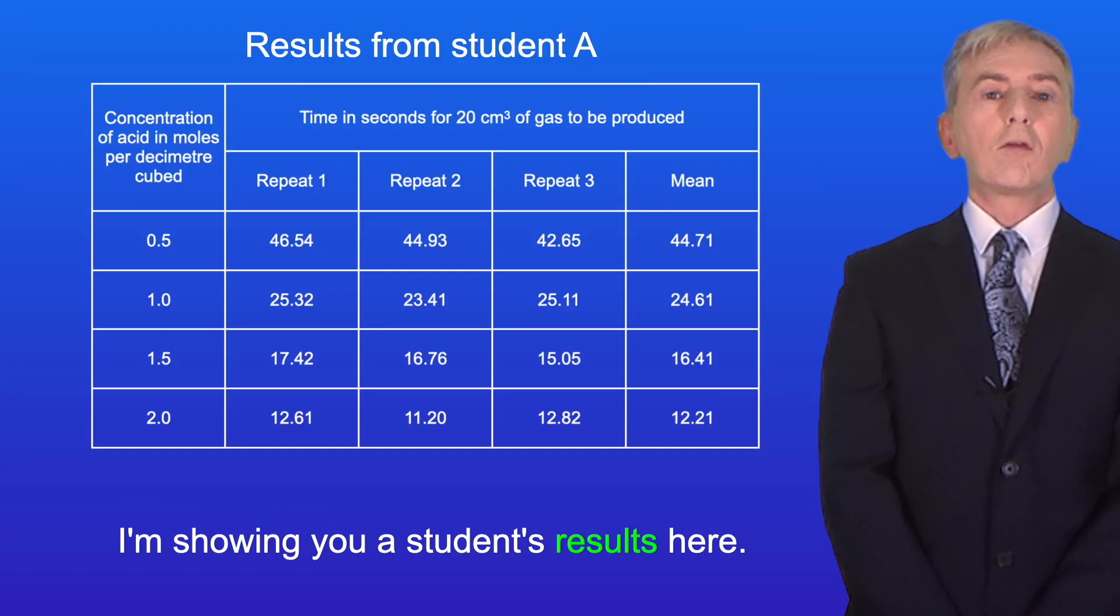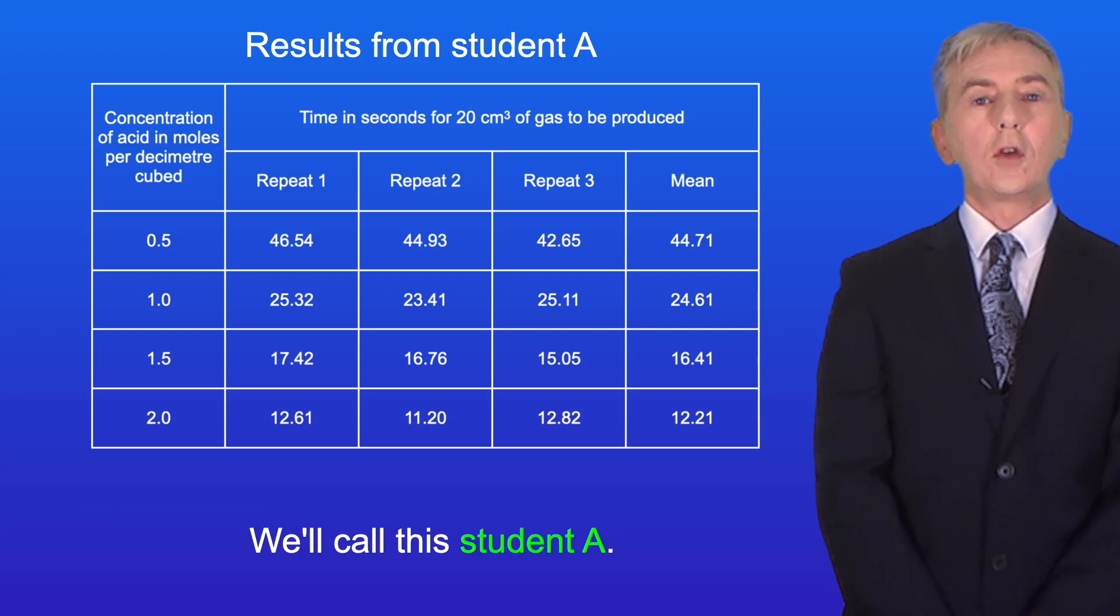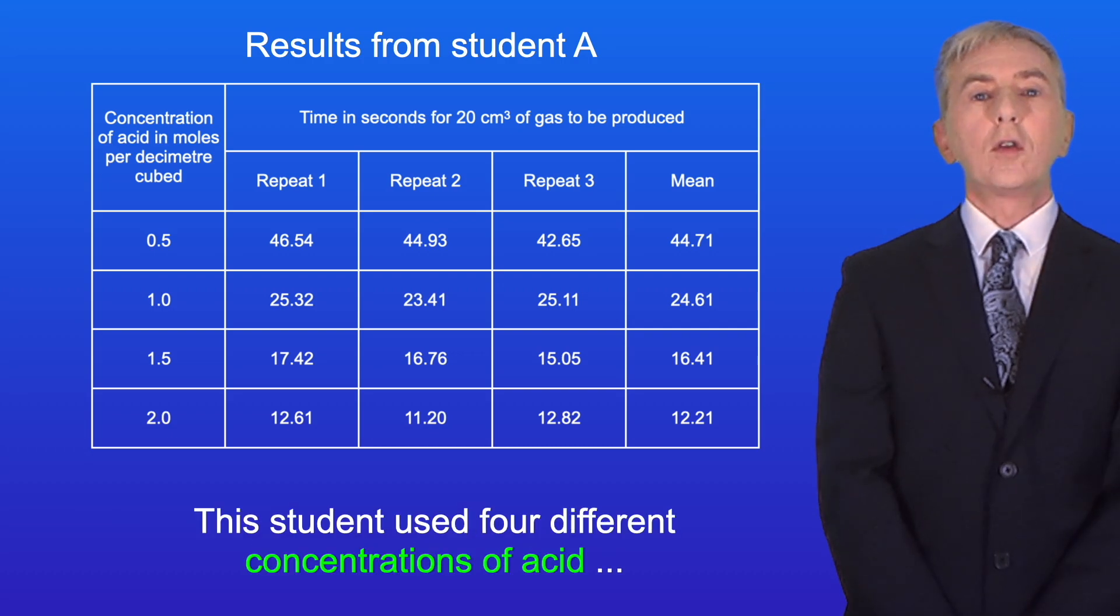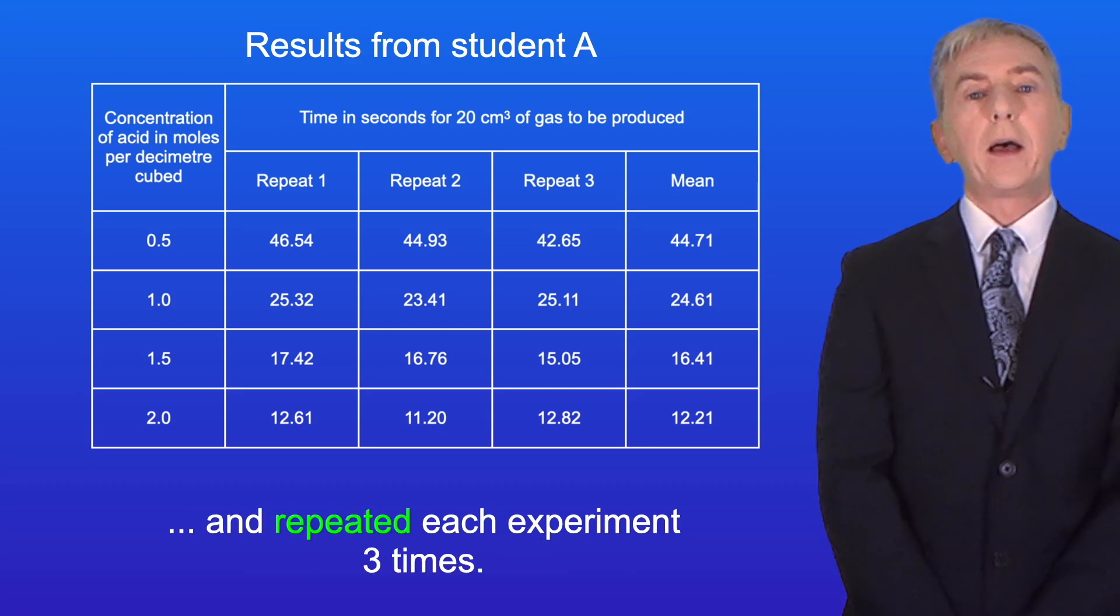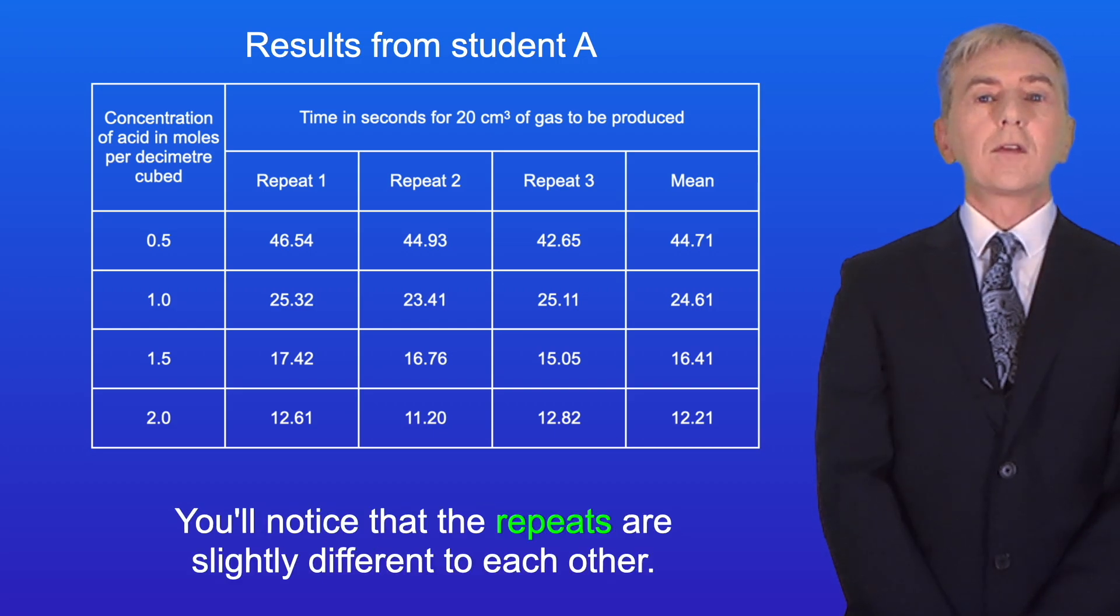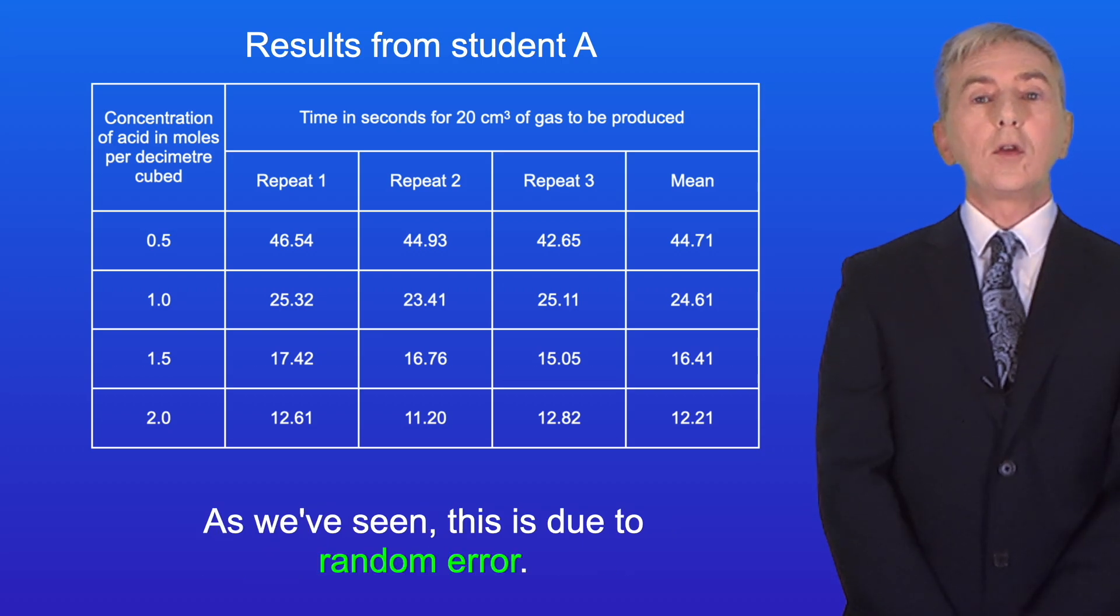I'm showing you a student's results here. We'll call this student A. This student used four different concentrations of acid and repeated each experiment three times. You'll notice that the repeats are slightly different to each other and as we've seen this is due to random error.